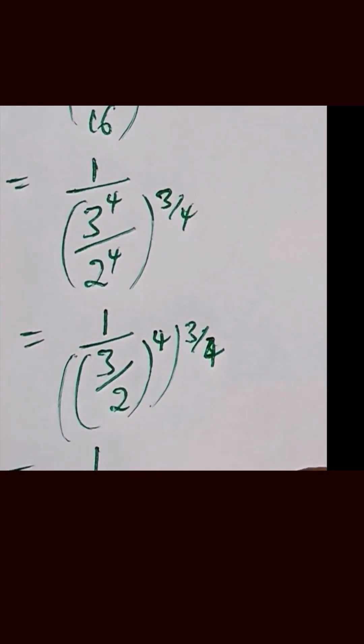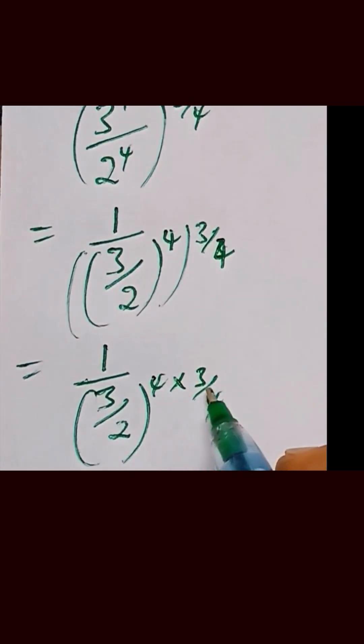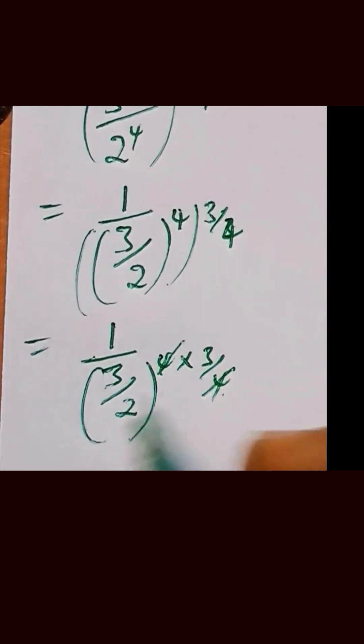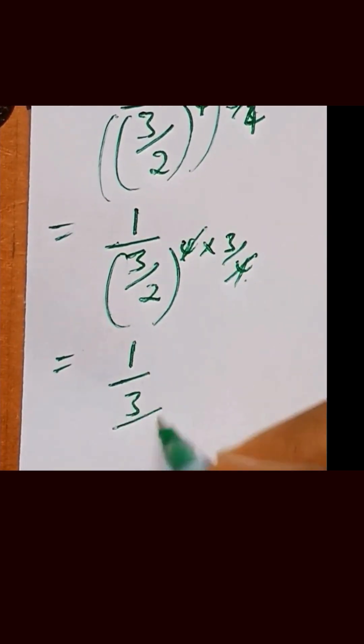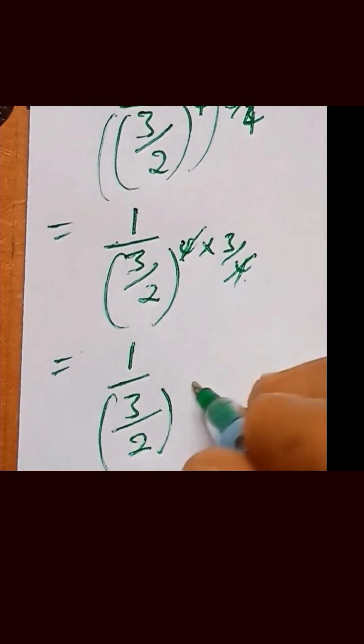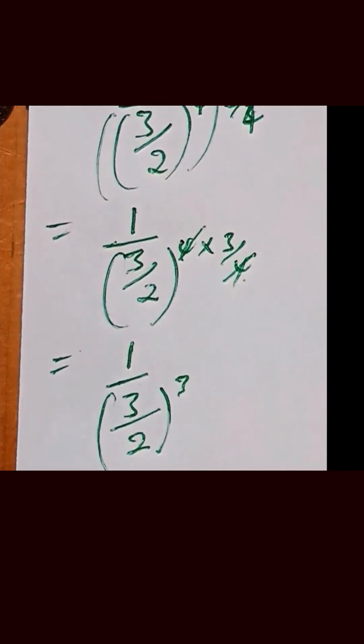We now have 1 over 3 over 2. Multiply this: 3, multiply by 4, then divide by 4. So this cancels out. We are left with 1 over 3 over 2 in brackets raised to the power of 3.